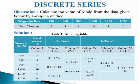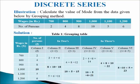Let us understand the grouping method with the help of the following illustration. We have to calculate the value of mode from the given data by grouping method. Wages and number of persons are provided. First we will make the grouping table with seven columns: the first column for wages (values of x), and six columns for frequencies. We write all the frequencies given in the question: 2, 4, 8, 10, 5, and 6. By observation, 10 is the highest frequency in column 1.